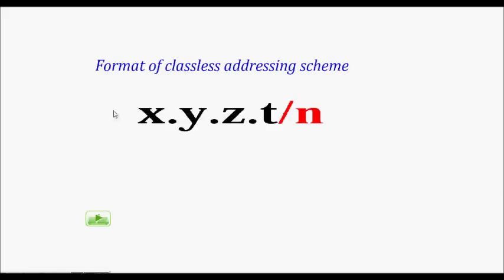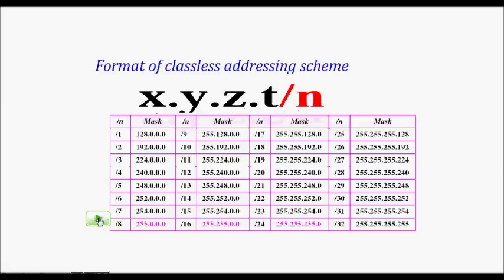The format of classless addressing is: x.y.z.t/n, where n is the prefix length indicating the number of bits used for the network part.